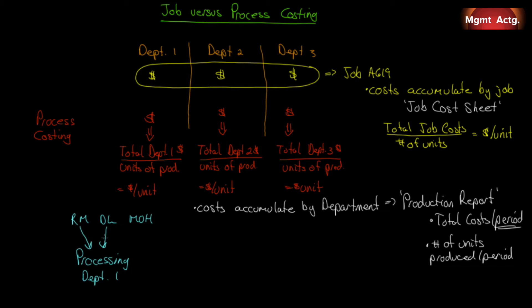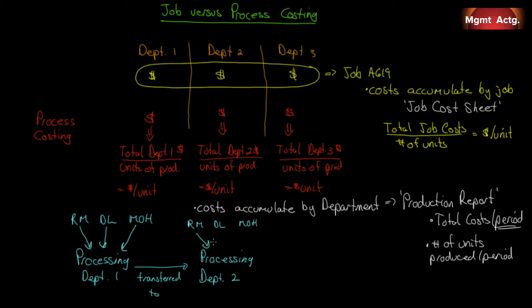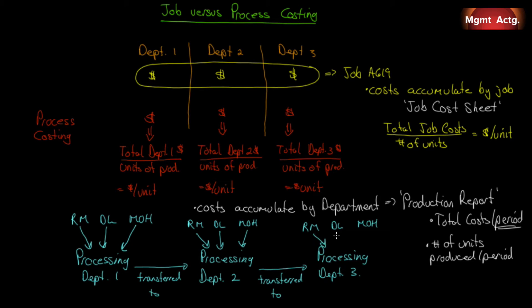The output of processing department one is transferred to processing department two. When transferred, all costs are embedded in that product, so they become a cost input in department two. Department two may also add more raw materials, direct labor, and manufacturing overhead to what was transferred in. The output of department two may then transfer to department three, where those transferred costs are recognized as costs coming in, and department three may or may not add more materials, labor, or overhead.